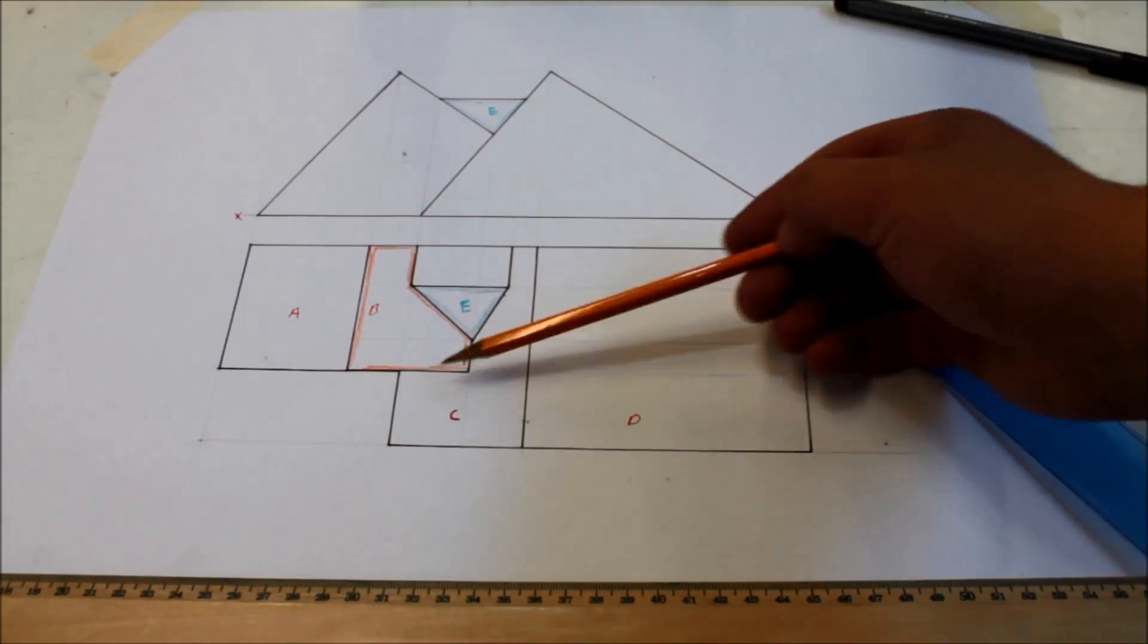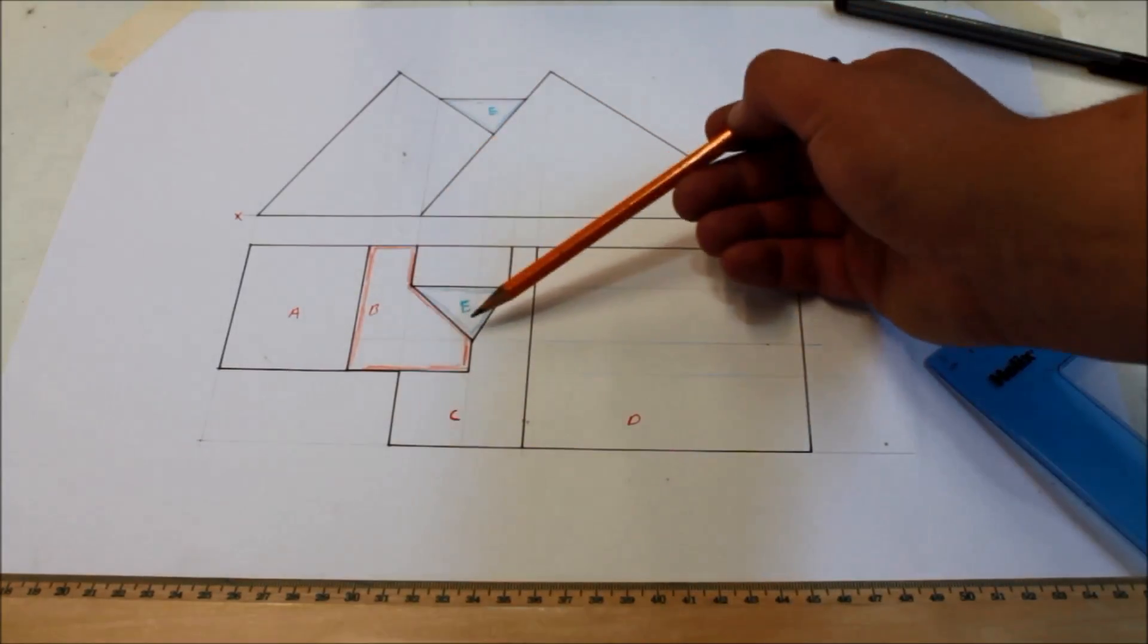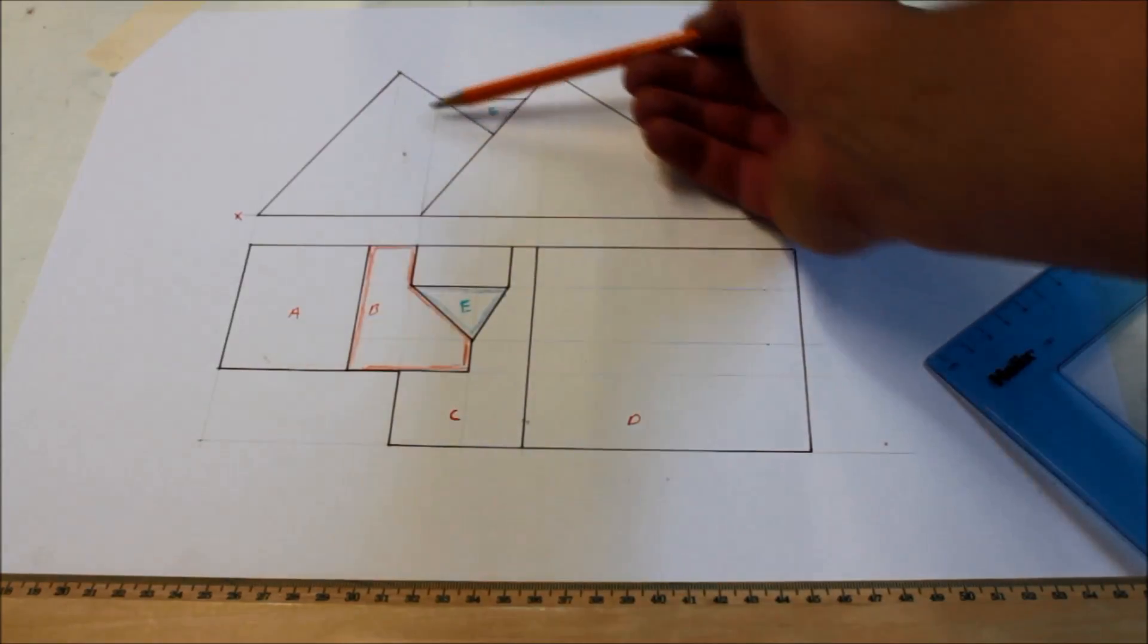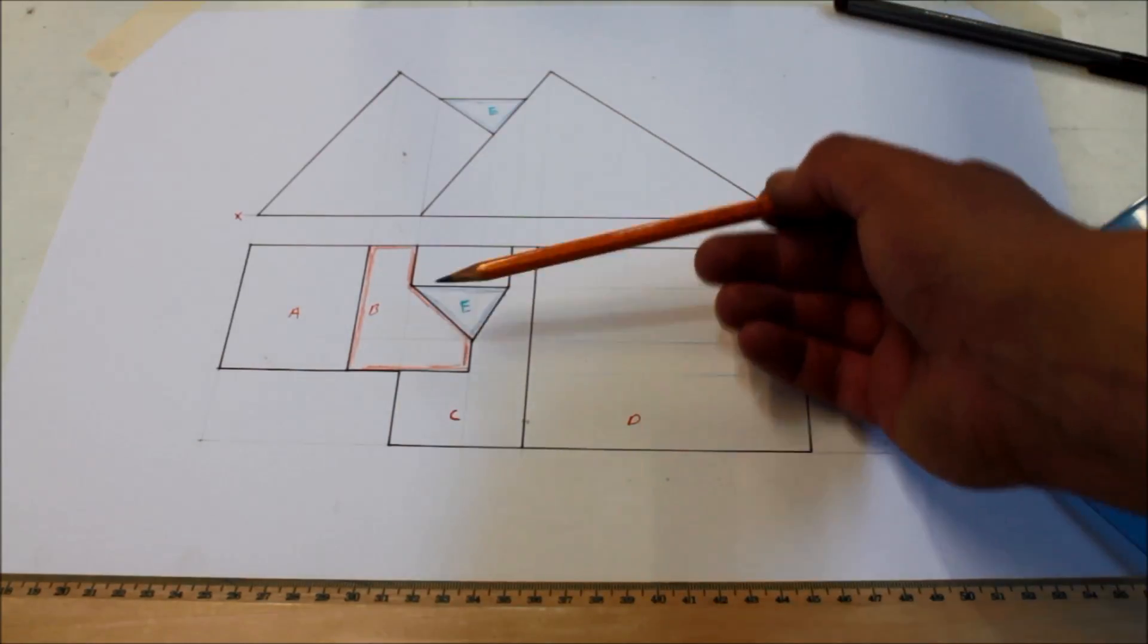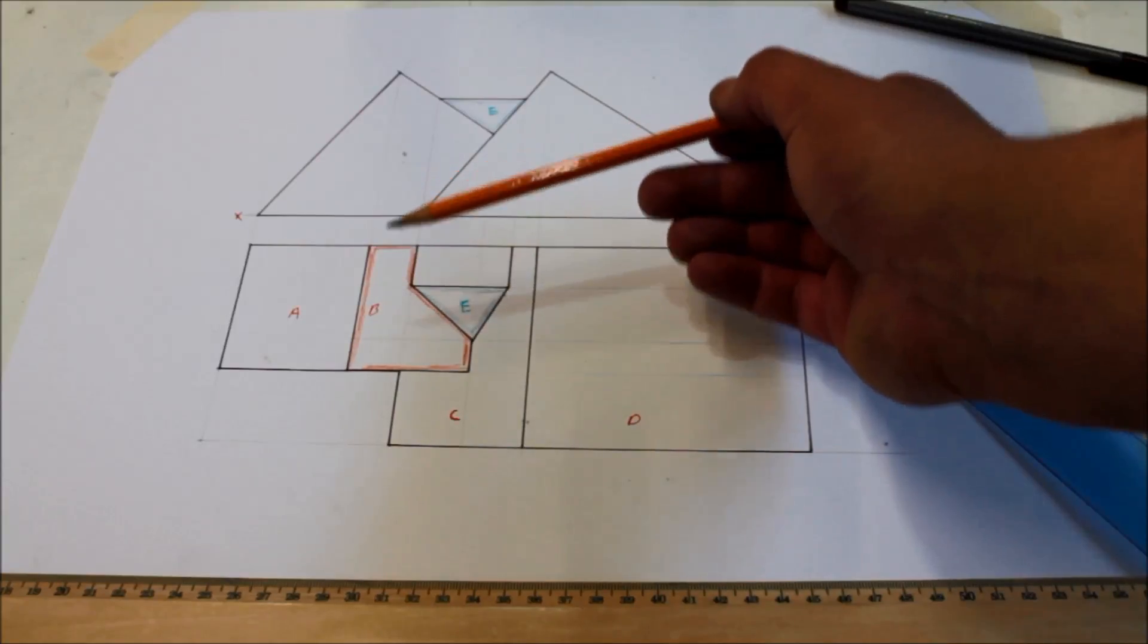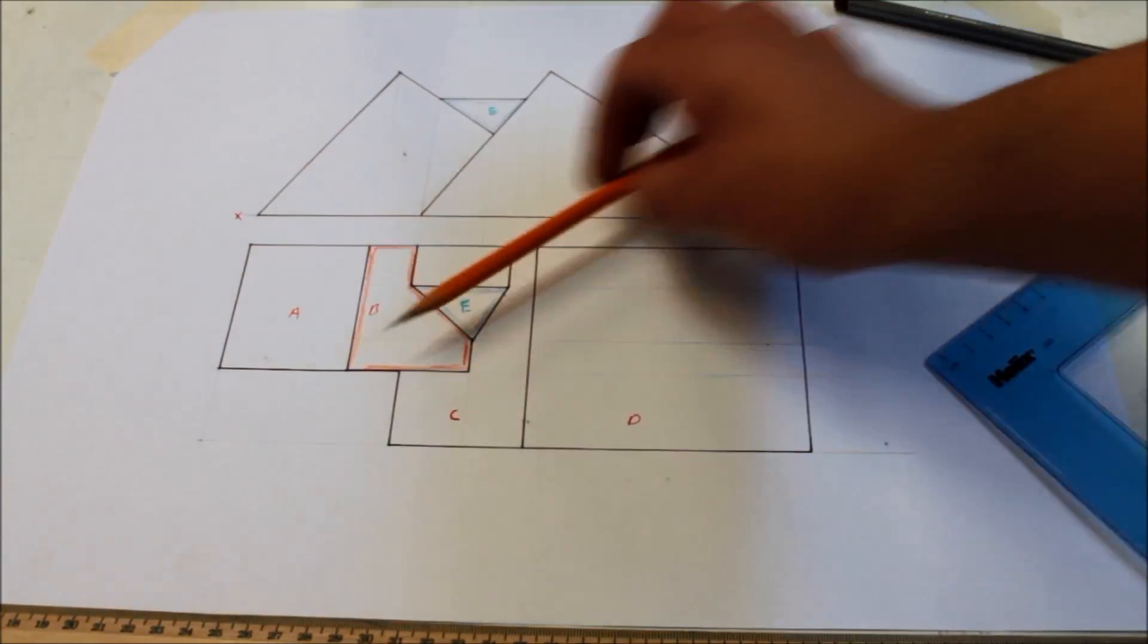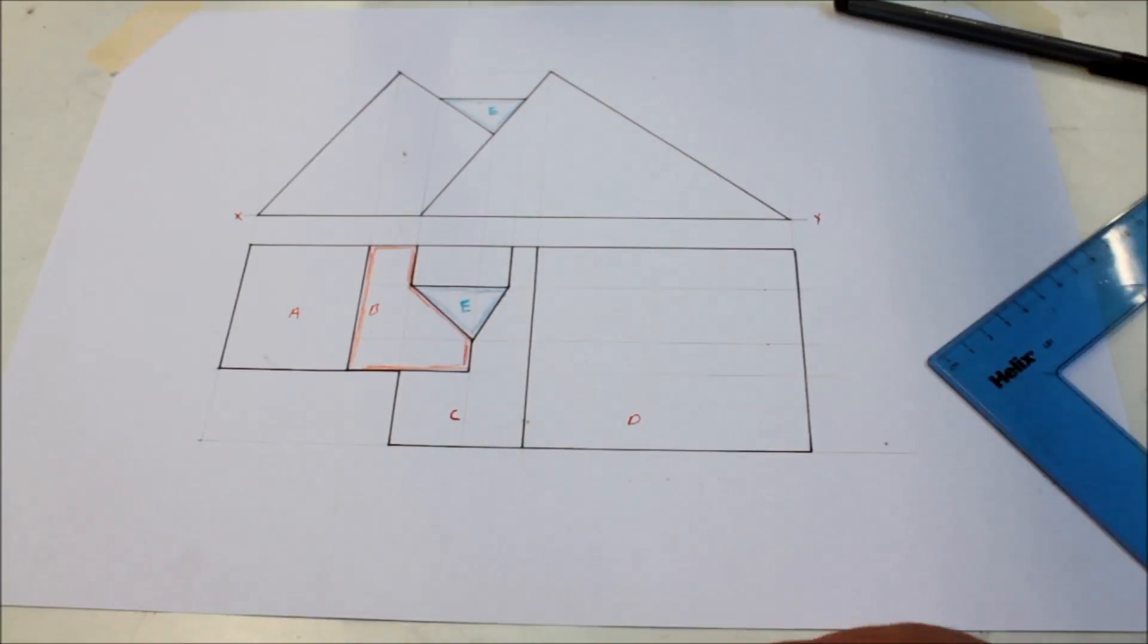So we need to find the dihedral angle between surface B and surface E. So in the elevation, this is surface B, that's surface E. Now we're here in plan, so our line in section is this line here. And we have the same line there in elevation. So we have a full surface area. Now this line in section is not parallel to XY in either of the views, even though you do have an edge view of surface B there.